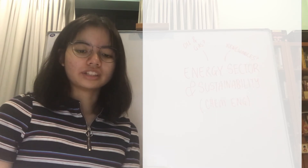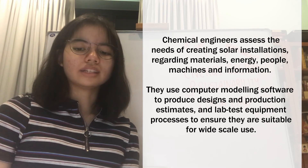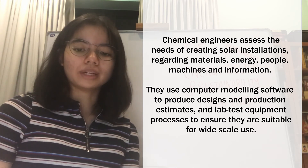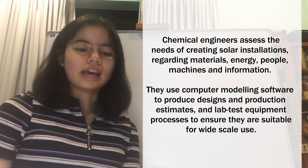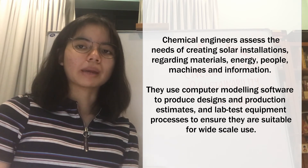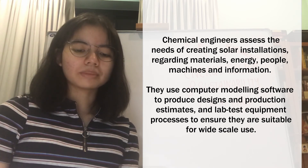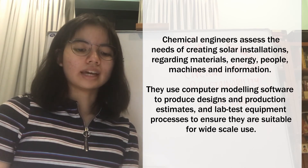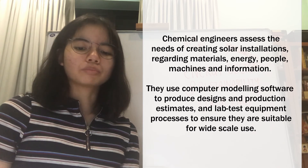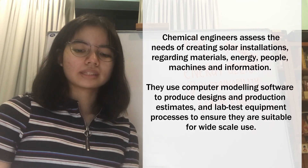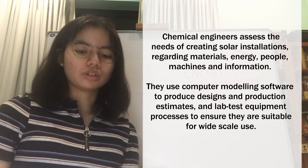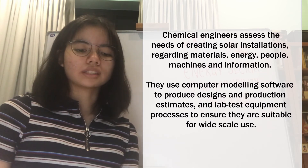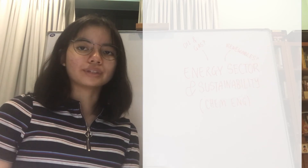Using the same example of solar energy, chemical engineers assess the need for creating solar installations and panels, including materials, energy, people, machines, and information. They research sites, energy usages and needs, and system capabilities. Aside from this, chemical engineers also use computer modeling software to produce detailed designs and energy production estimates, prepare project plans, schedules of work and cost estimates, manage the integration of the renewable energy produced into existing systems, and test equipment and processes in a lab to make sure they are suitable for large-scale use.